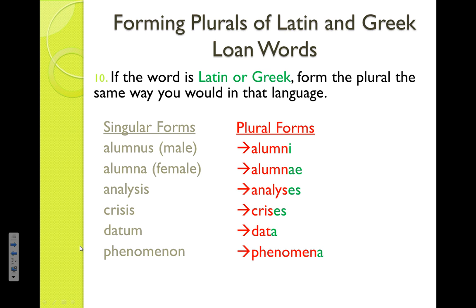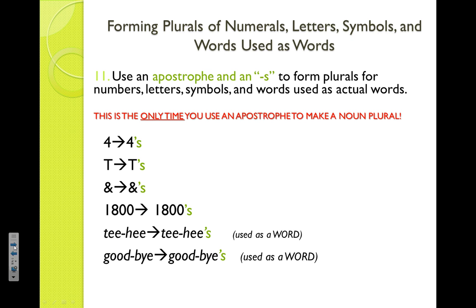Are you ready for the last rule, Nuggets? Rule eleven covers the only time when you may use an apostrophe to actually make a noun plural. I have been harping on you non-stop about apostrophes — many of you are forming plurals incorrectly by adding an apostrophe every single time you add an S. As we've learned, apostrophes are generally used to show possession, except in these specific instances.